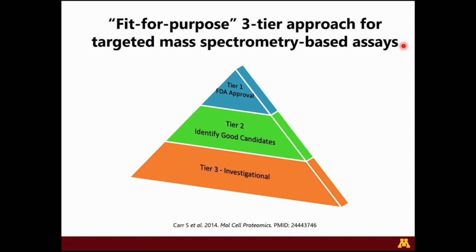Back in 2013, representatives from academia, government, and industry established a framework around these assays — a three-tiered fit-for-purpose approach. Tier 3 assays are investigational assays. Tier 2 assays are aimed at identifying good biomarker candidates. Tier 1 assays are ready to be submitted for FDA approval. The goal of this framework is to help facilitate the translation of these mass spec-based assays into the clinic.